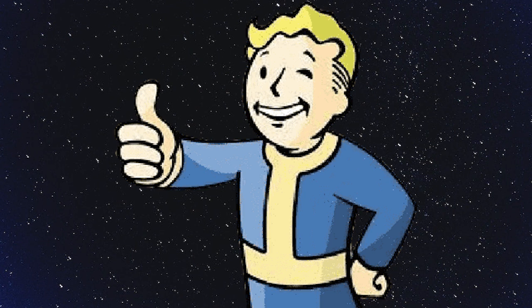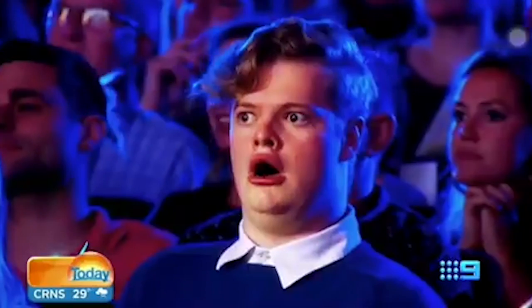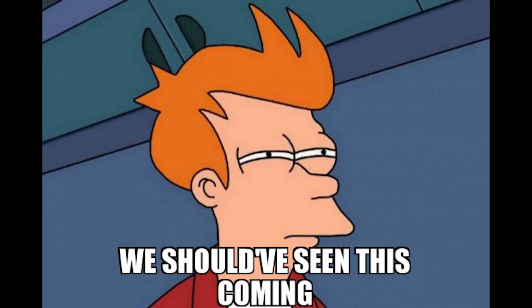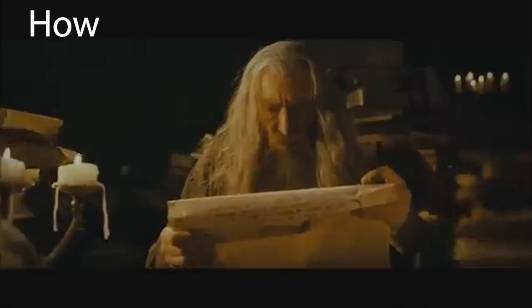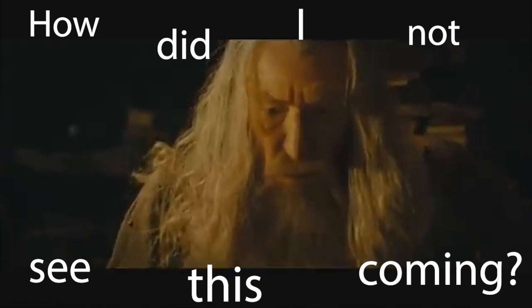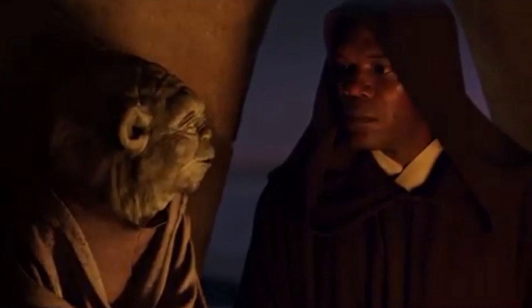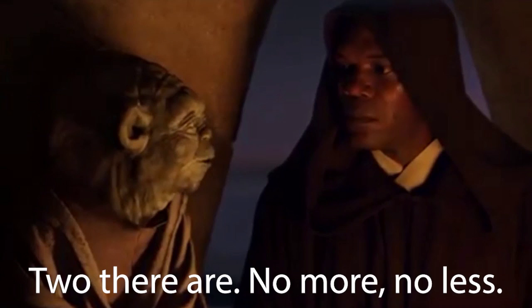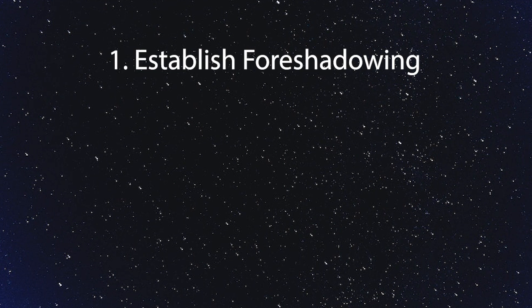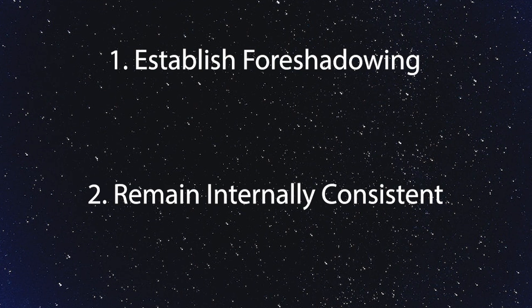My rule of thumb for a good subversion is that the audience should be shocked by the development, but feel as if they shouldn't be. Basically, after looking back through what came before the subversion, the audience should be asking one question: how did I not see this coming? There are really only two things that must be included in your story to accomplish this — you need to establish foreshadowing for the subversion, and you need to remain internally consistent with your own story, characters, and setting.